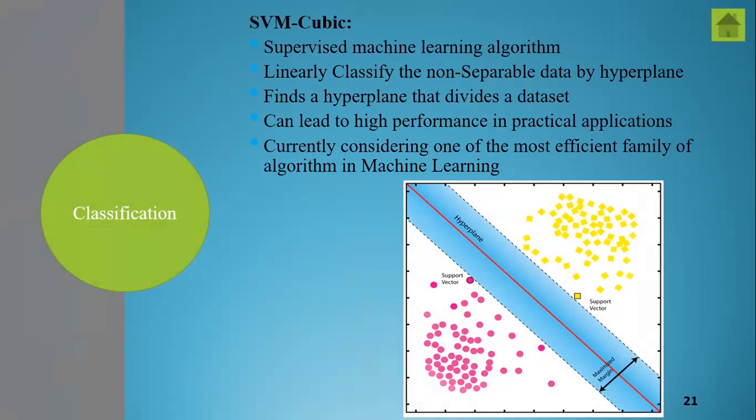The final step of methodology is classification. The classifier on which we got the highest accuracy was SVM-cubic, a type of SVM classifier and a supervised machine learning algorithm. It linearly classifies non-separable data by hyperplane — first finding a hyperplane, then dividing the dataset. It leads to higher performance in practical applications and is considered one of the most efficient families of algorithms in machine learning.